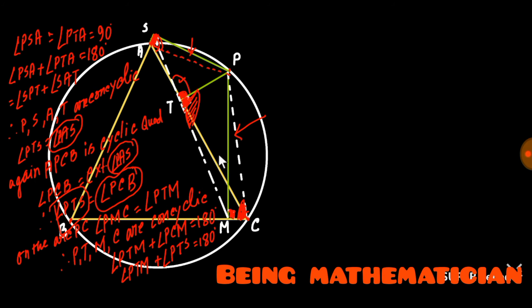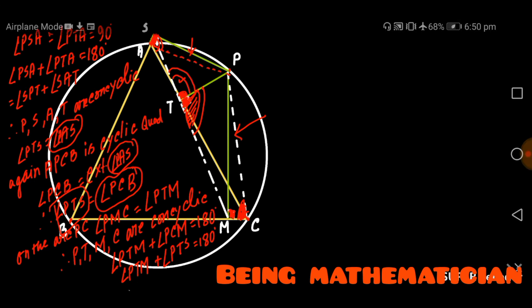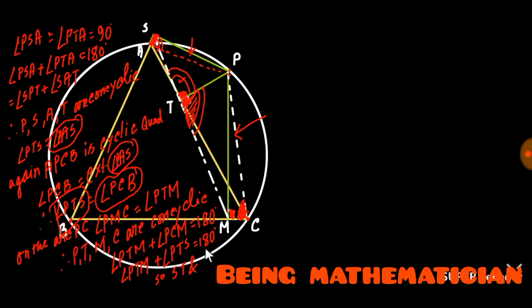So angle PTM and angle PTS together equal 180 degrees. This means S, T, and M lie on the same straight line.